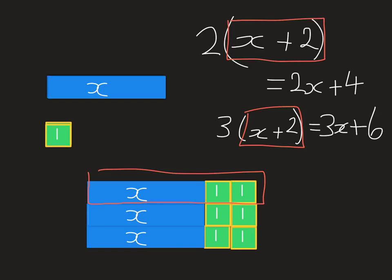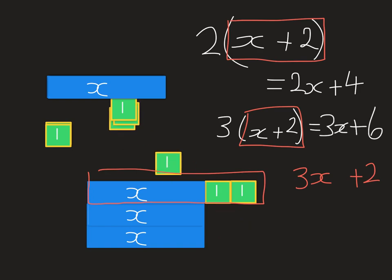If I just wanted to have 3 lots of x, and then add 2, that would look different. Because I would have 3 lots of the x, but I would only have 2 of the green ones, and that would look different.